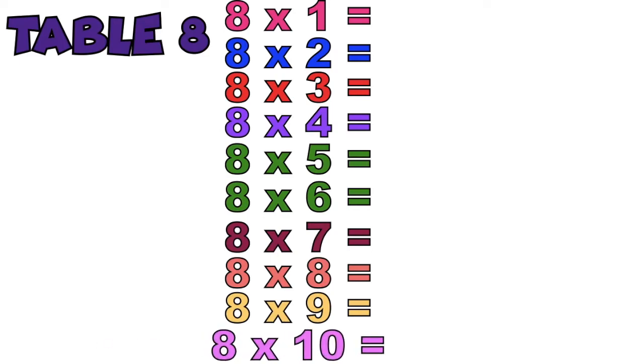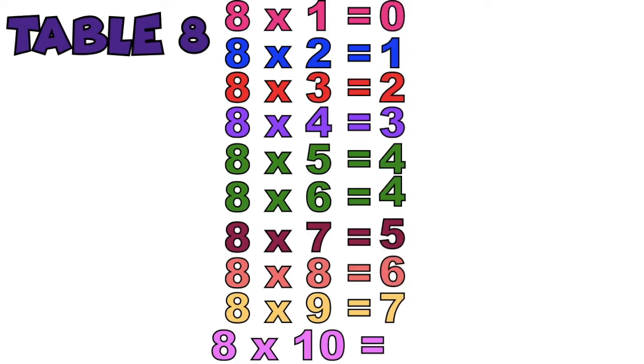And then, from the top, we're going to write 0 to 4: 0, 1, 2, 3, 4. Then, let's write 4 to 8: 4, 5, 6, 7, 8. As you can see, at the middle, we have two 4s.